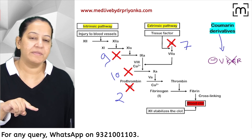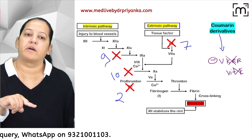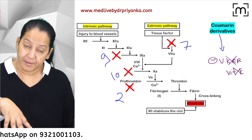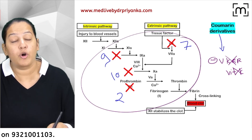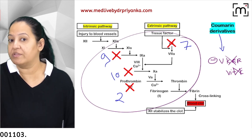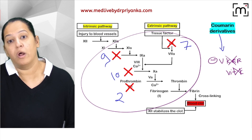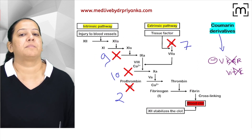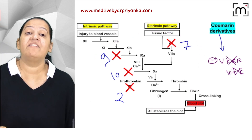If the vitamin K epoxide reductase enzyme is inhibited, vitamin K activation will not occur — vitamin K will remain inactive. If vitamin K is inactive, these four factors (2, 7, 9, 10) will not be activated, so new synthesis of these four factors will not occur. However, it does not neutralize those four factors already present in the blood.